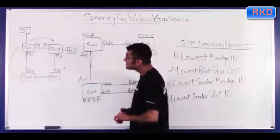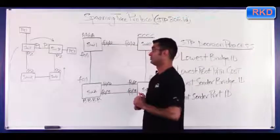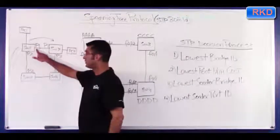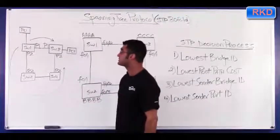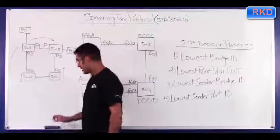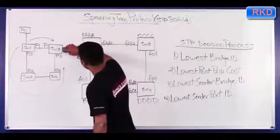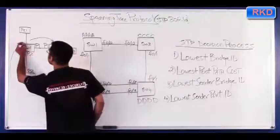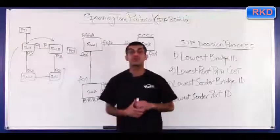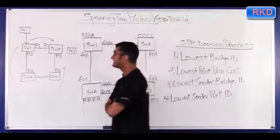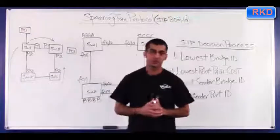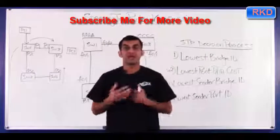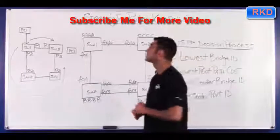Let's pretend that PC1 sends a frame out to PC3. Switch 1 knows that PC3 exists going out port 1 and also going out port 2. Now, let's pretend that as that frame is being sent, the link between switch 3 and PC3 fails. So the frame makes it to switch 1, and at this point switch 1 does not know where PC3 is. What does a switch do with a frame where it doesn't know where the destination MAC is — an unknown unicast frame? The switch floods it out.